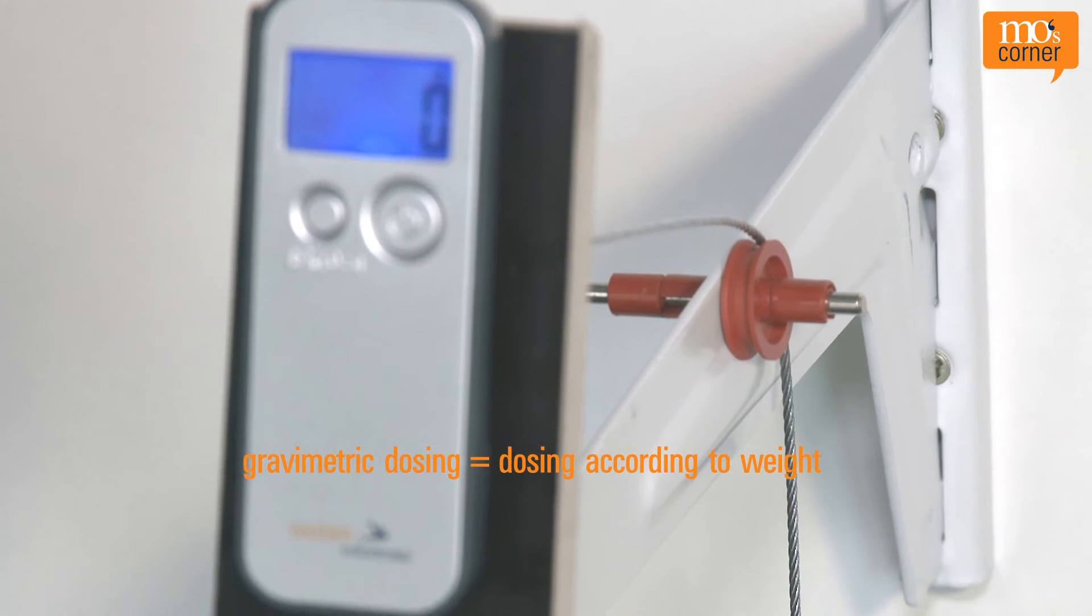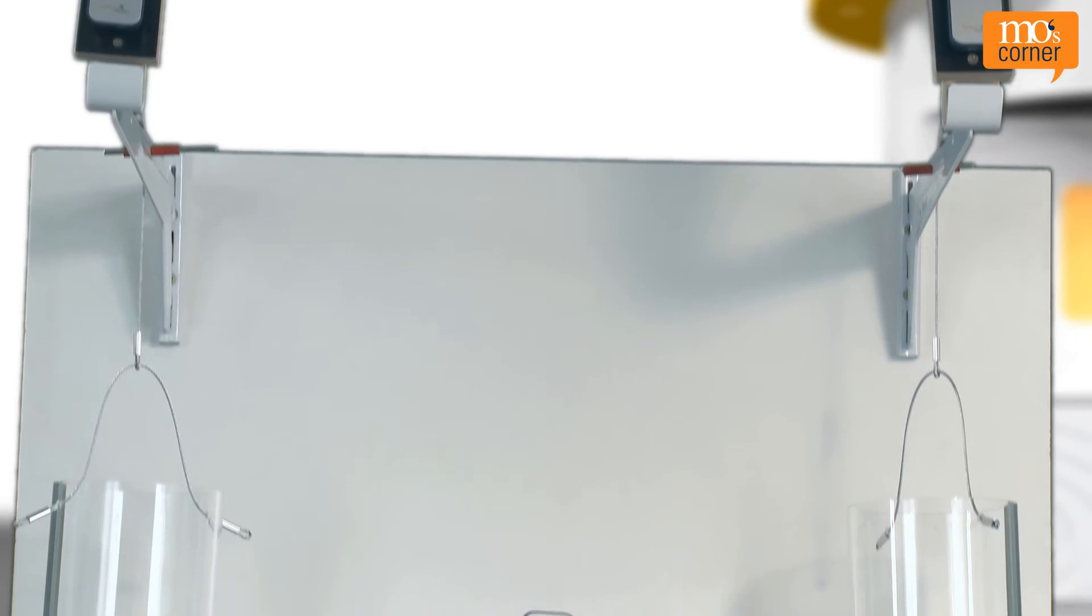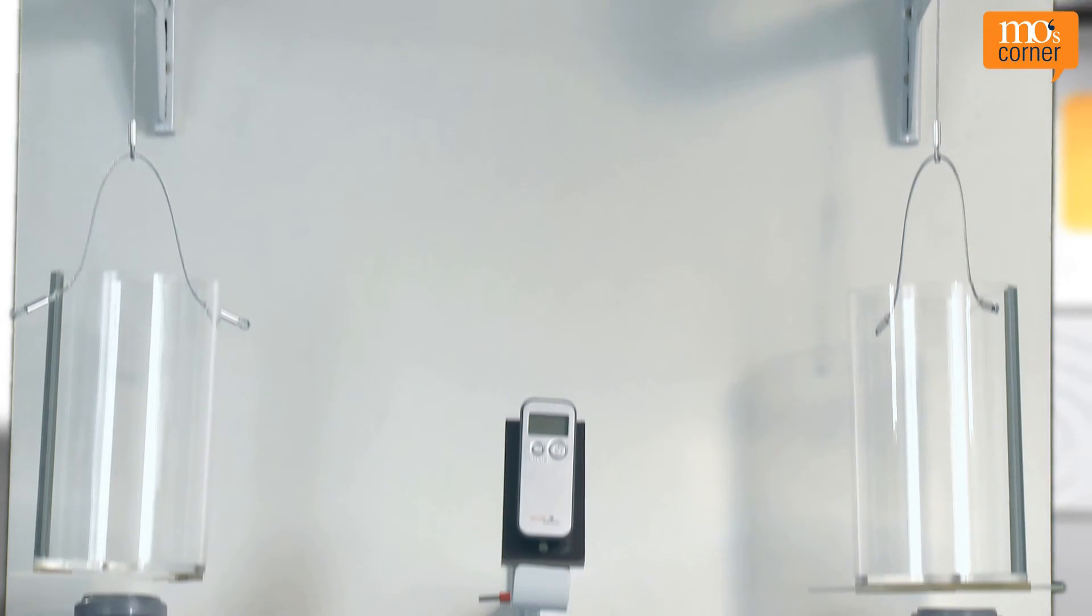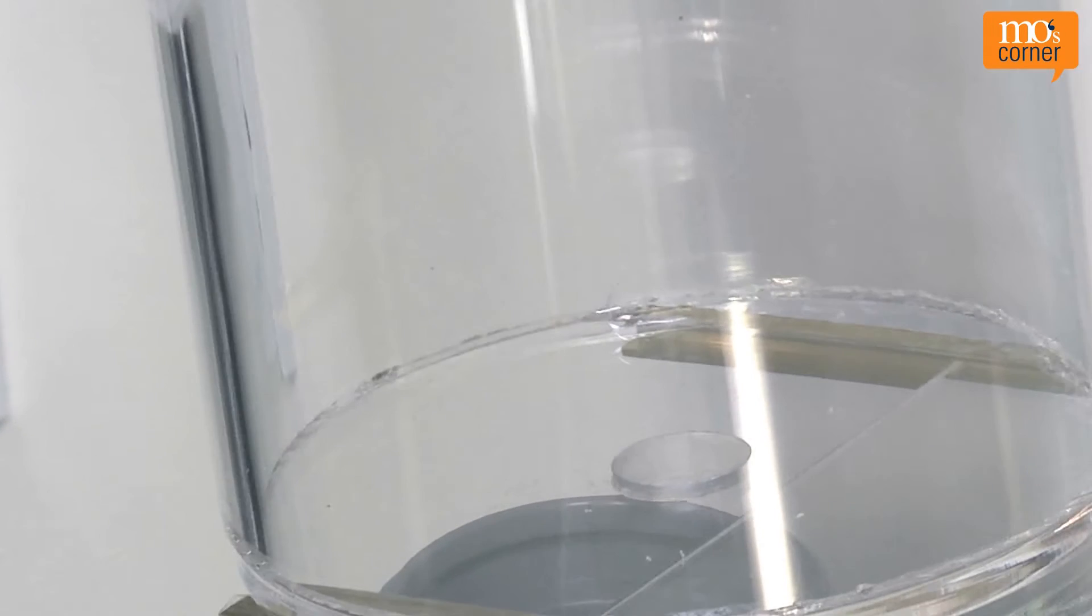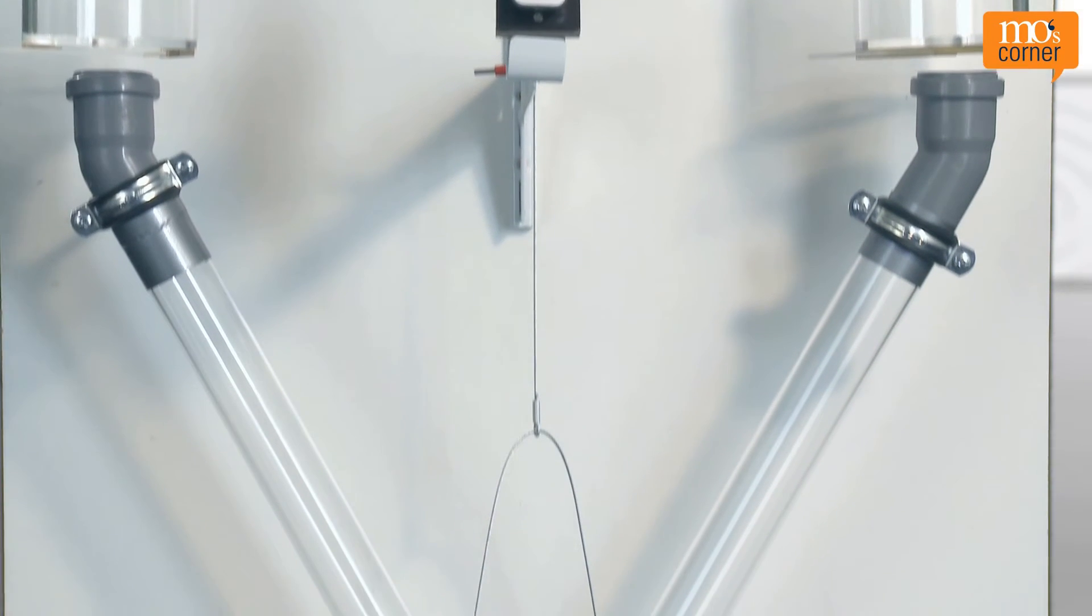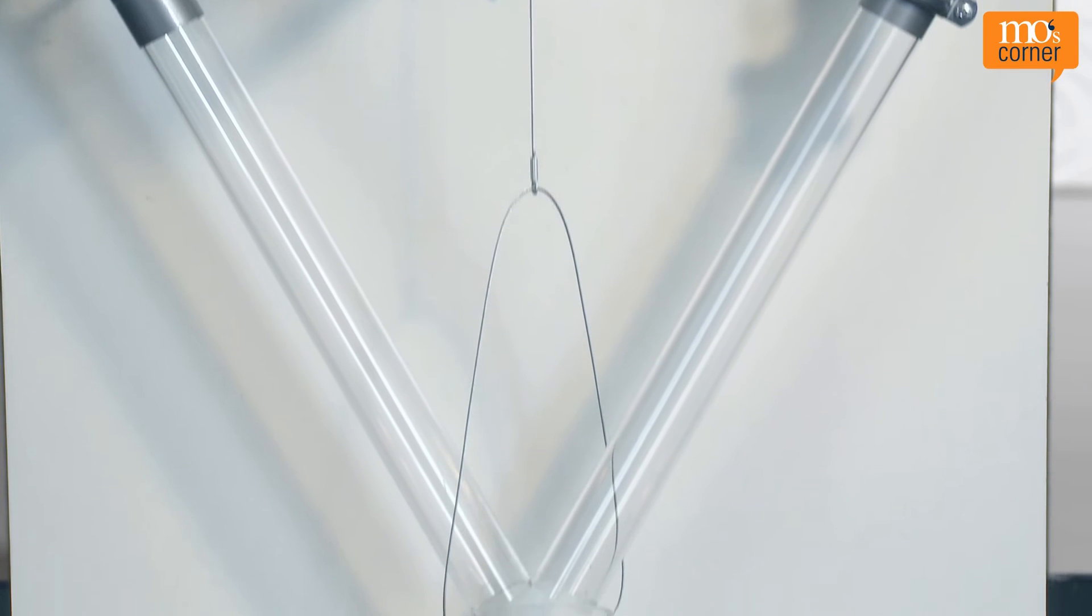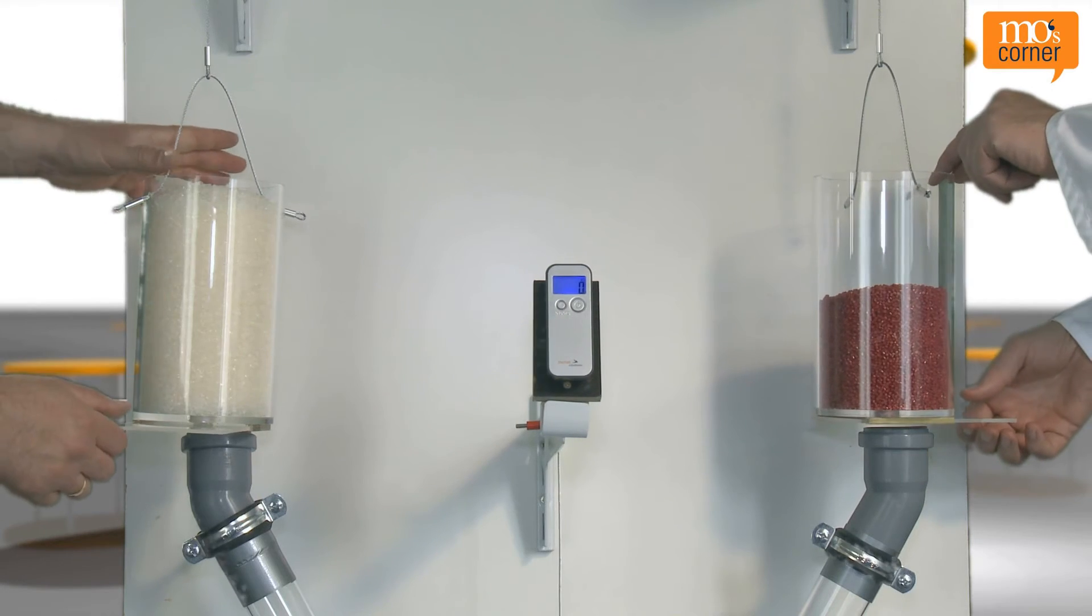With gravimetric dosing, the material is dosed by weight. In our experiment we have hung two containers from the scales. The dosing unit is a simple disk. The granules from both containers flow into another container through a pipe.